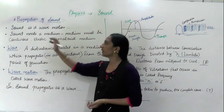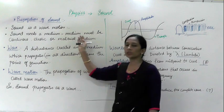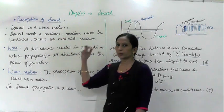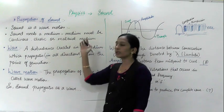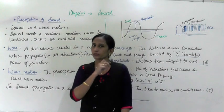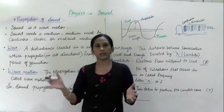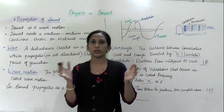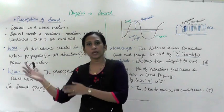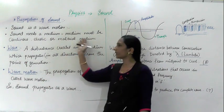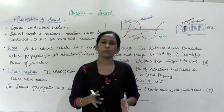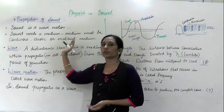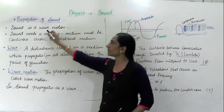Sound needs a medium. A medium is any substance or material needed for the propagation of sound. The medium should be continuous — air is present everywhere, so it acts as a continuous medium. It should also be elastic, meaning the molecules should be able to move, so that vibrations can pass through each other. It should be a material medium — solid, liquid, or gas — for the propagation of sound.